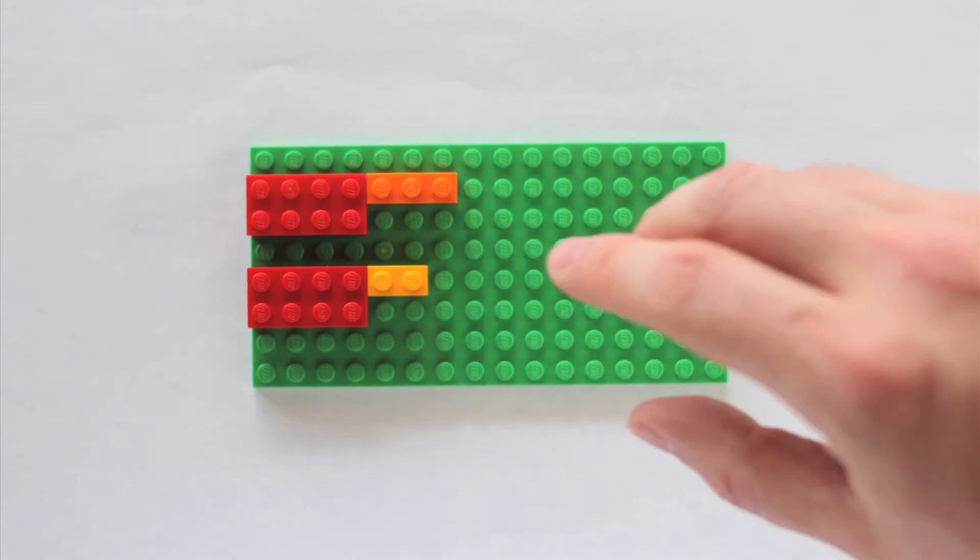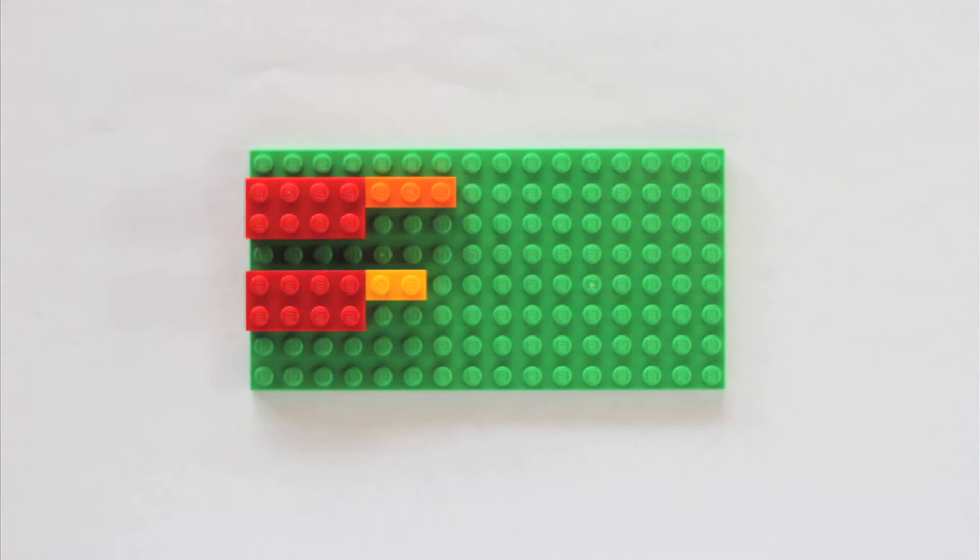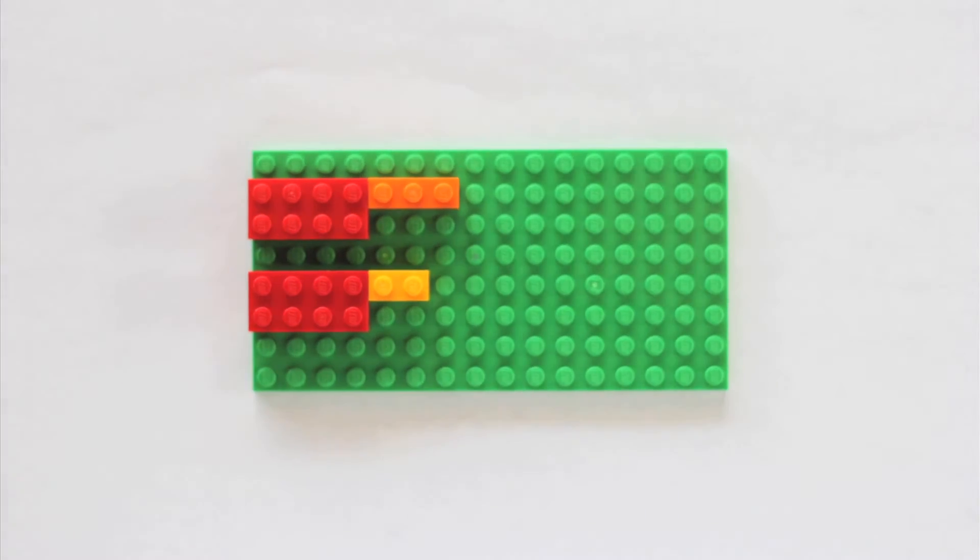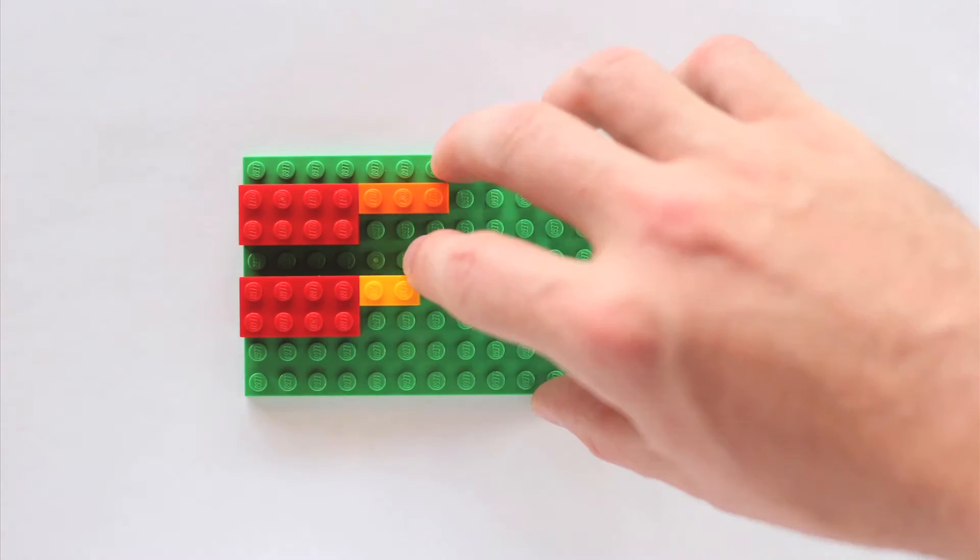Above the other 2x4 brick, place one 1x2 brick. Use different colored bricks to demonstrate that the numerators are not the same.